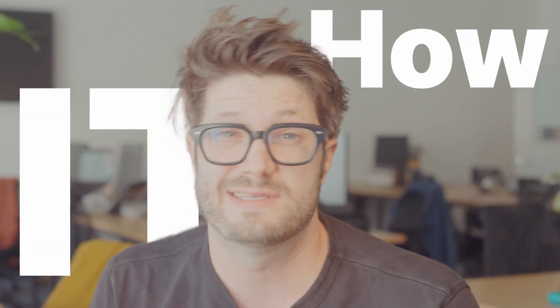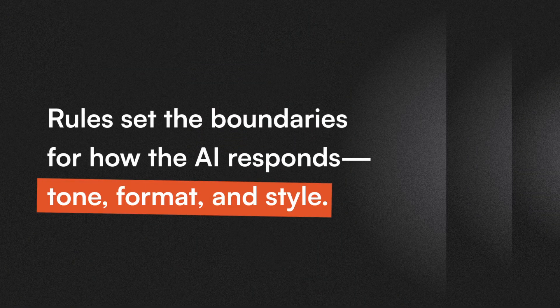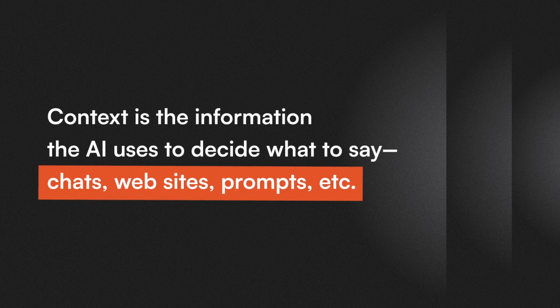It's obviously more complicated than that. What constitutes an AI's behavior — is it what an AI says, or how it says it? This is where most people get tripped up. They confuse rules with context, and when that happens, they often have false expectations and get frustrated. Rules set the boundaries of how AI responds — things like tone, format, and style — while context is the information that AI uses to decide what to say: facts, examples, past chats, websites, all of that. Context drives the content, but rules can still shape how that content gets used and delivered.